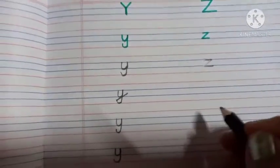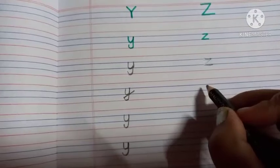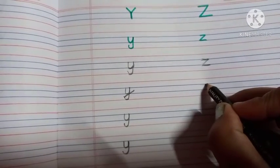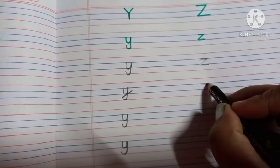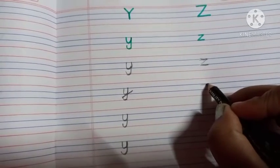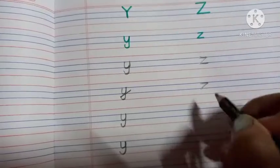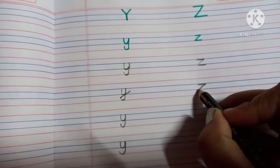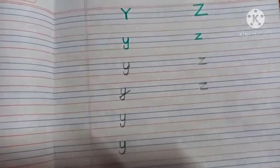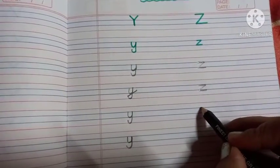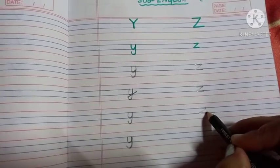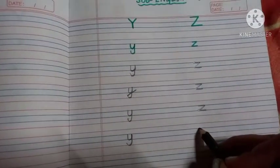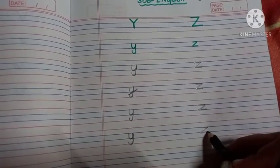This is very easy. At first, draw a sleeping line to the right side, then from the ending point of the sleeping line draw a forward slanting line like this, and again draw a sleeping line — and it will become the small letter Z. This is very easy to write. Small letter Z — this is the last letter of the English alphabet.